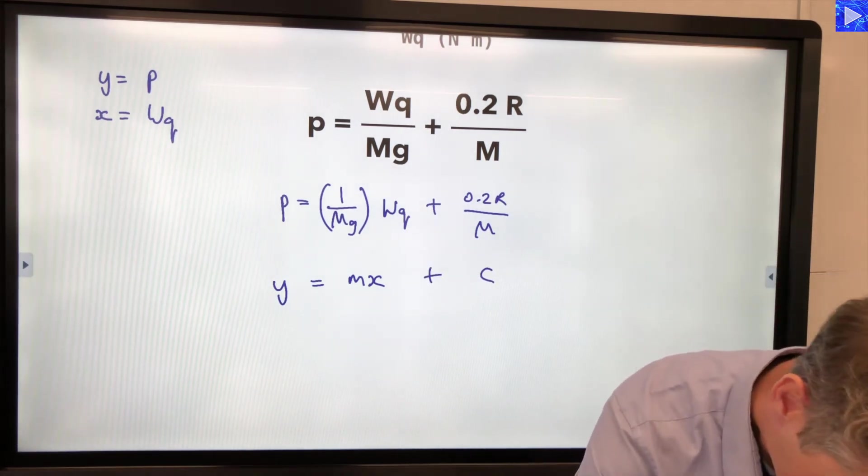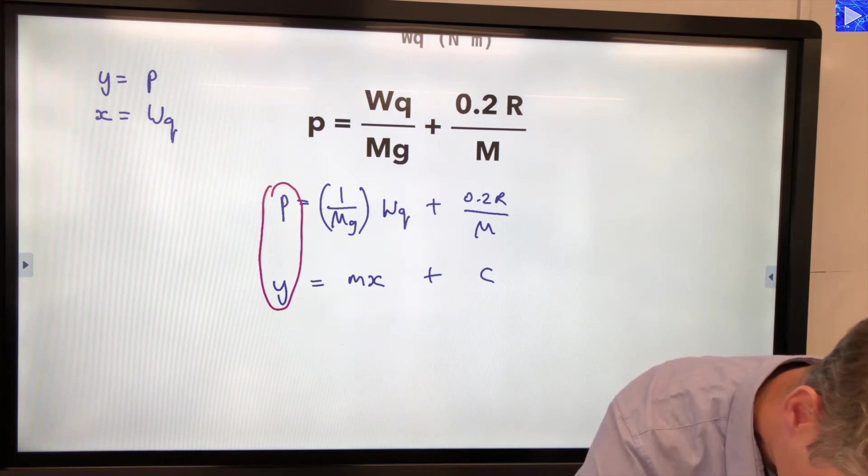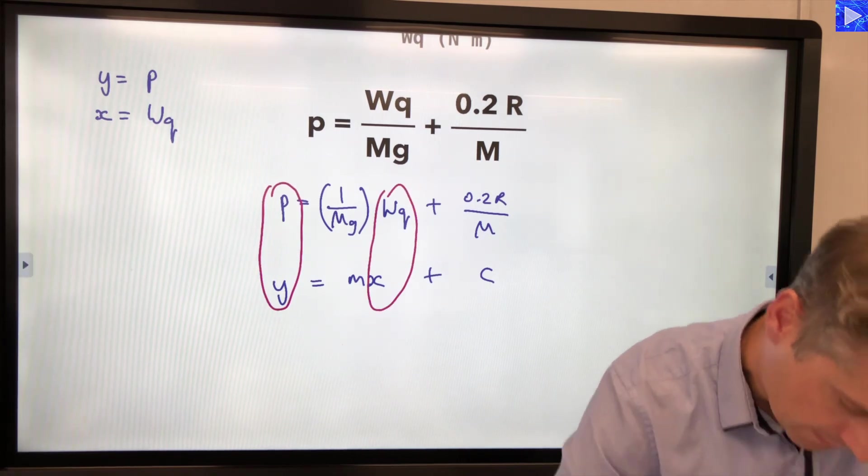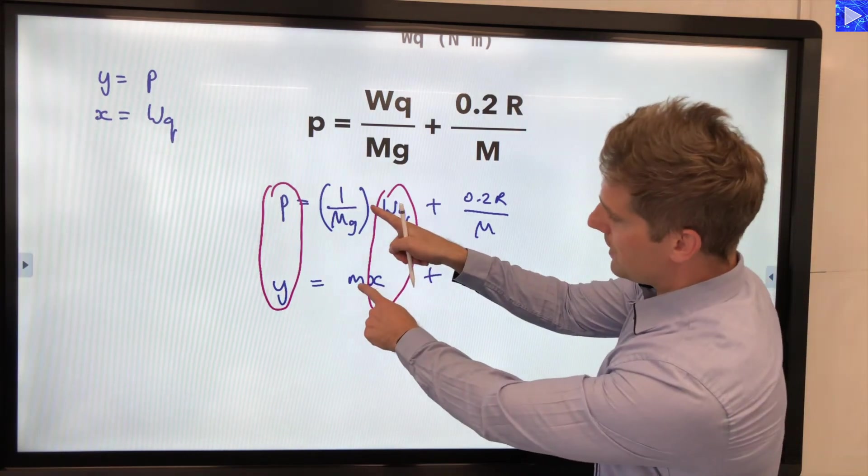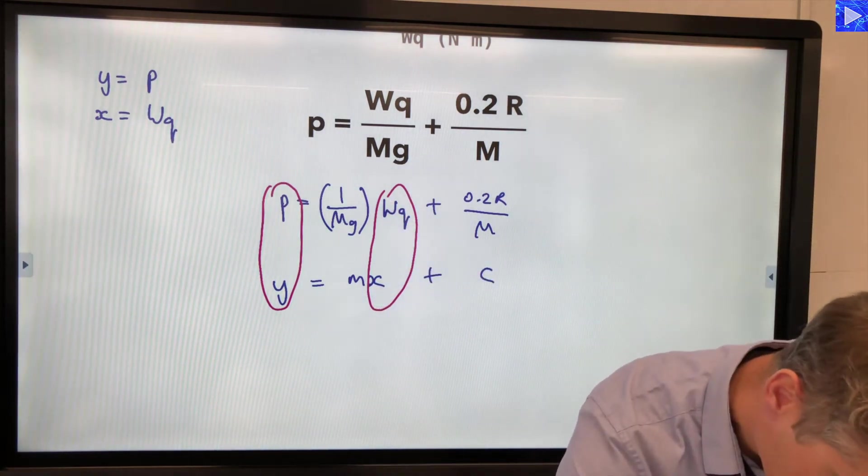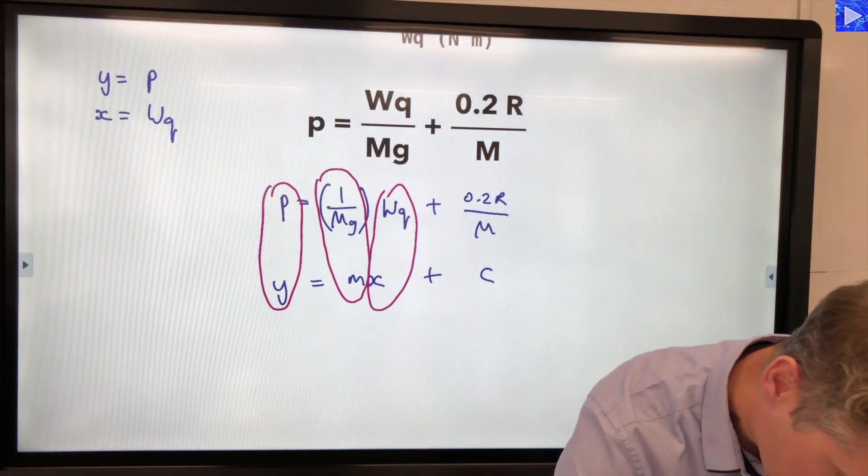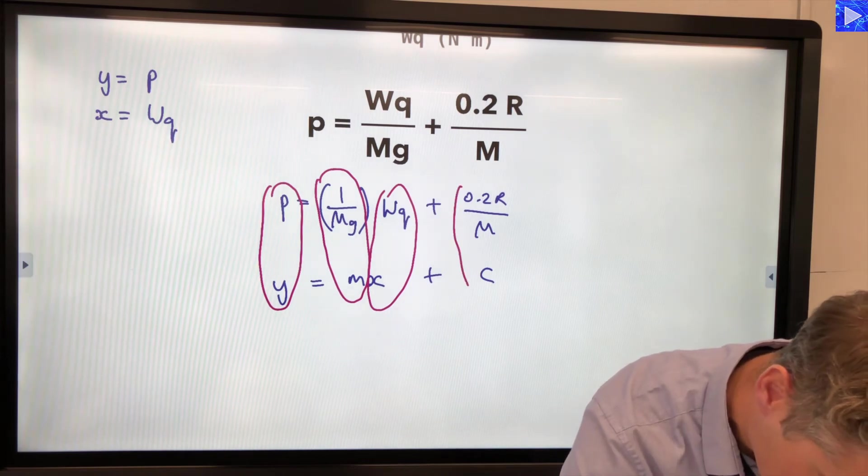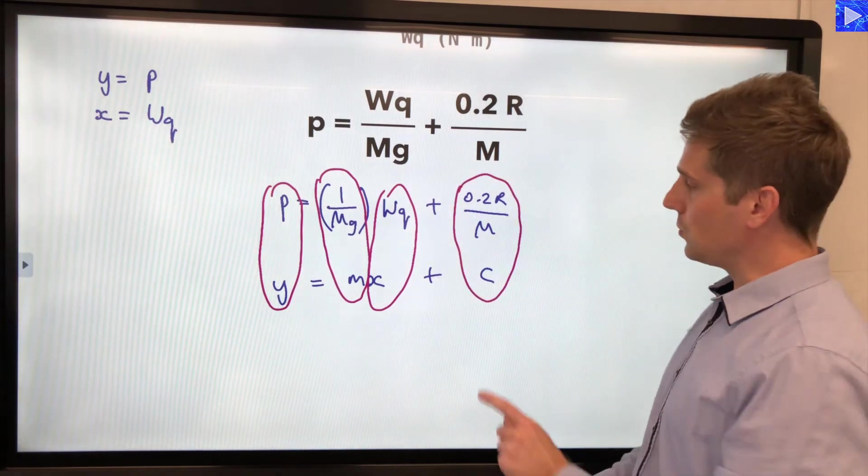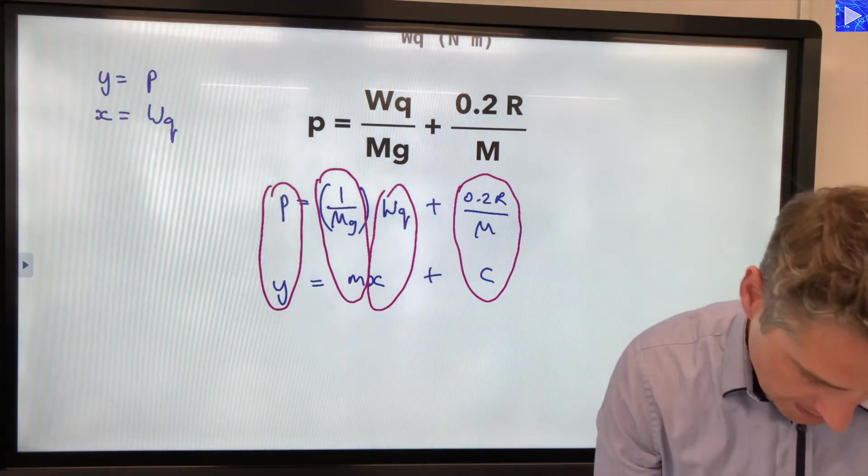Okay so y is p. x is wq. Then the gradient is equal to 1 over mg. And the y intercept is 0.2 r over m. Let's write those down.